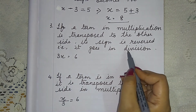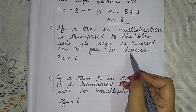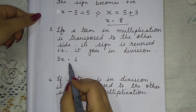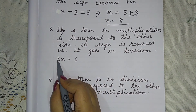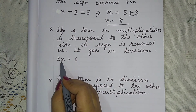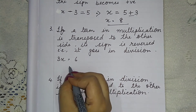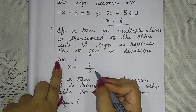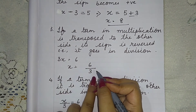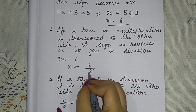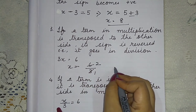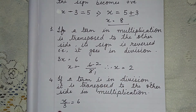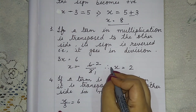Point number 3: if a term is in multiplication, it is transposed to the other side as division. For example, 3x equals 6. The 3 multiplied by x moves to the right side as division: x equals 6 by 3, so x equals 2.